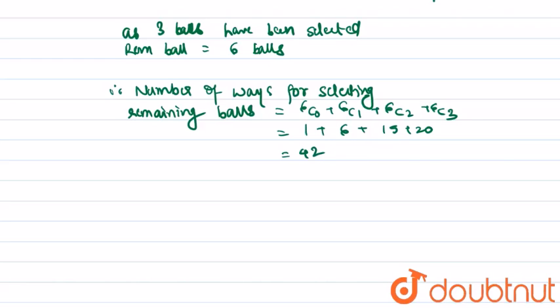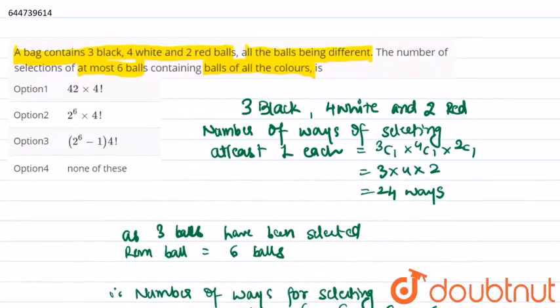So we've got that there are 42 ways for selecting rest of the balls. Therefore, total ways can be given as 24 into 42 equal to 42 into 4 factorial. So let us check the options. 42 into 4 factorial, option one is correct.